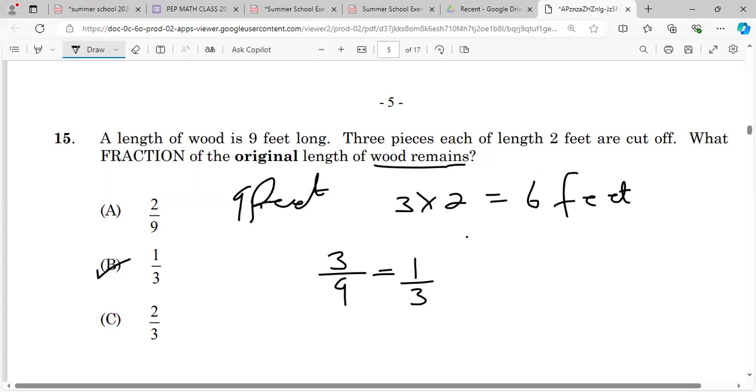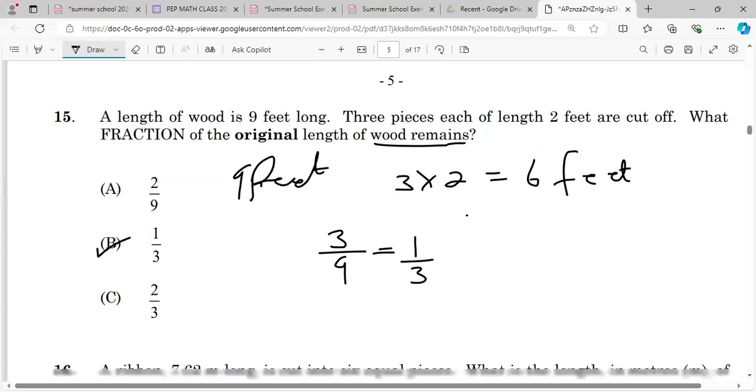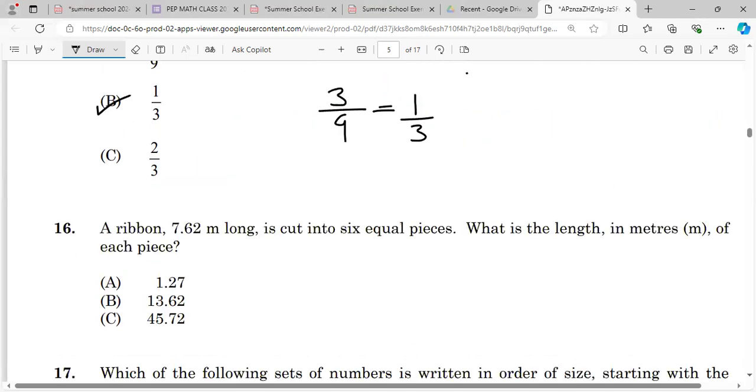A ribbon 7.6 meters long is cut into 6 equal pieces. What is the length in meters of each of the pieces? So guys, I don't think we need to work it out based on the answers. It has to be this, because we're going to divide it by 6.